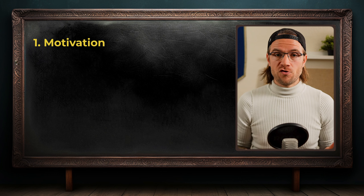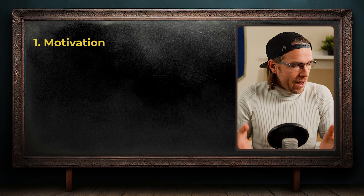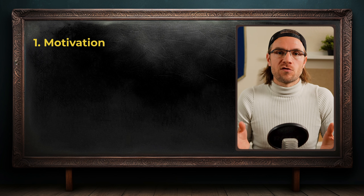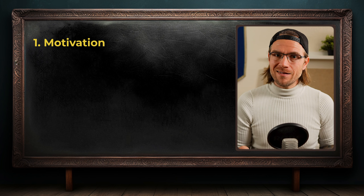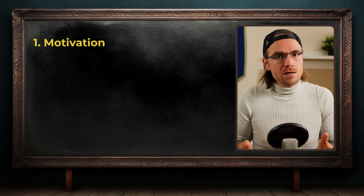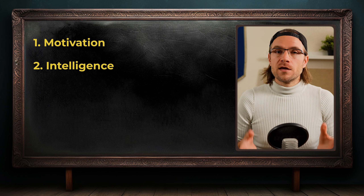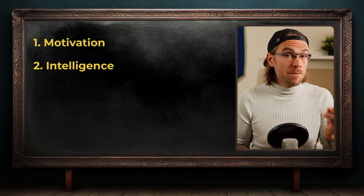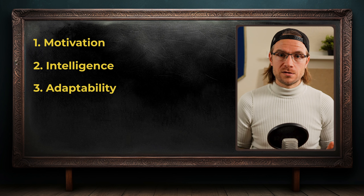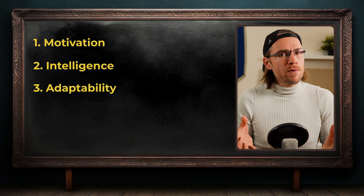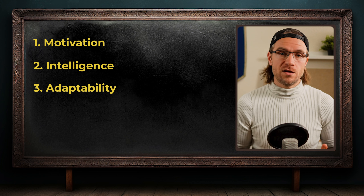Here are the essential elements. First: motivation. Your trickster needs a driving force. Maybe they are seeking revenge, or perhaps they genuinely believe their actions will bring about positive change. Whatever it is, it should be complex and relatable. Second: intelligence. Tricksters outsmart their opponents — give your villain a keen mind and the ability to think several steps ahead. Third: adaptability. Tricksters are survivors. They should be able to change their plans on the fly and turn setbacks into advantages.